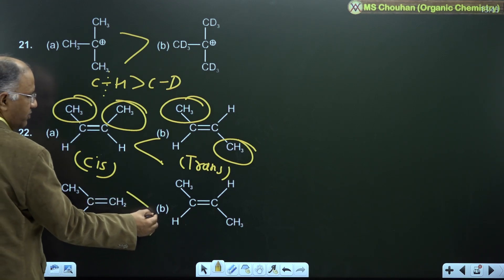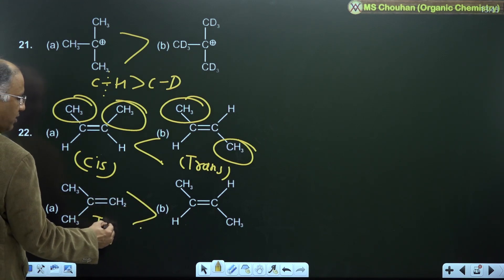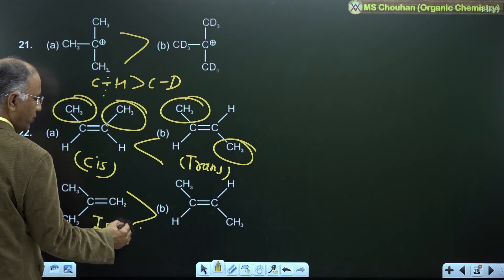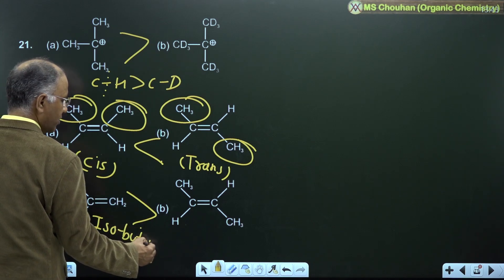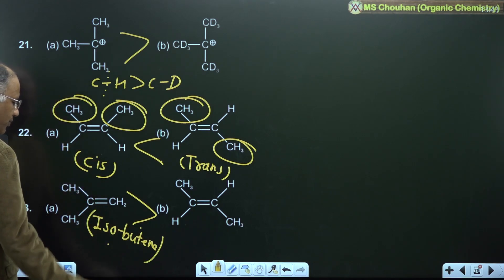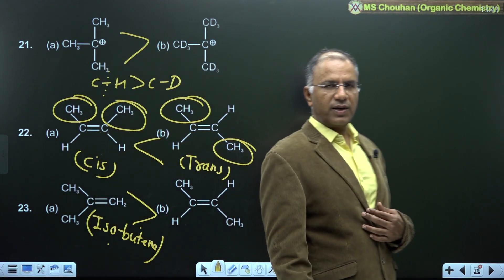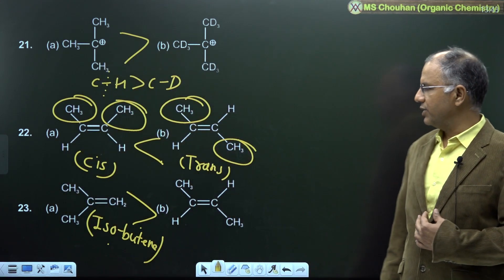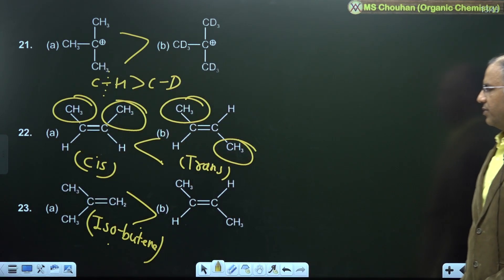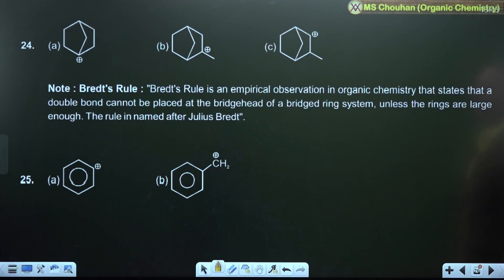For example 23: isobutene is the most stable isomer of butene — this is a point to remember. Isobutene is most stable because of its highly stable hyperconjugating structures.